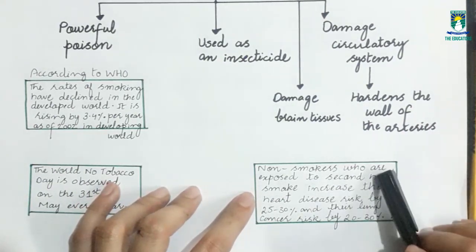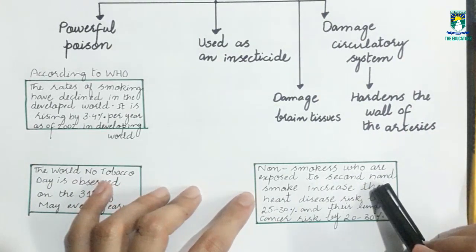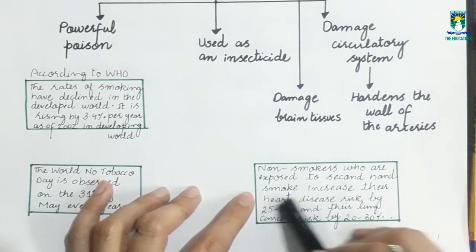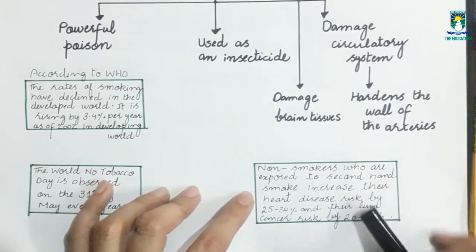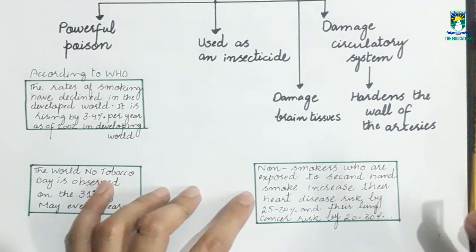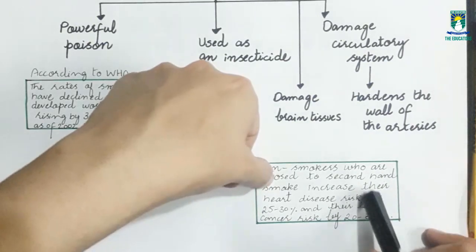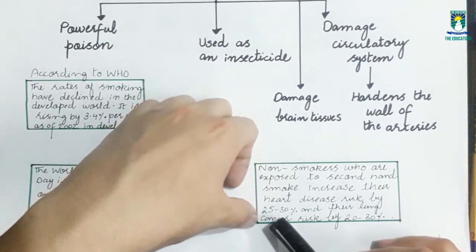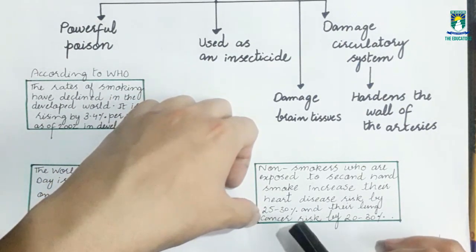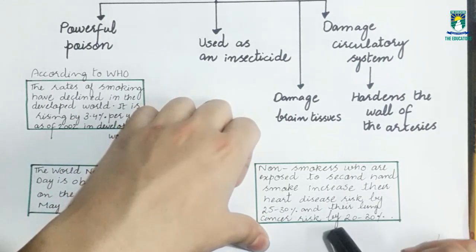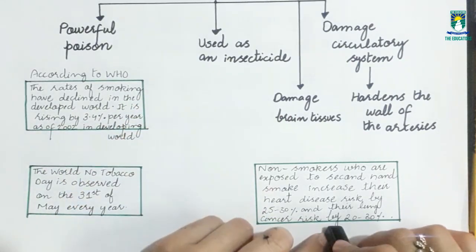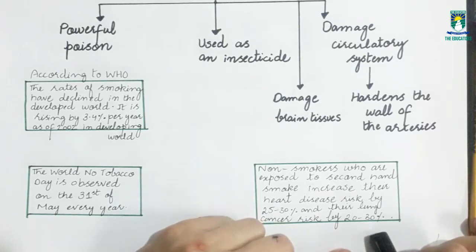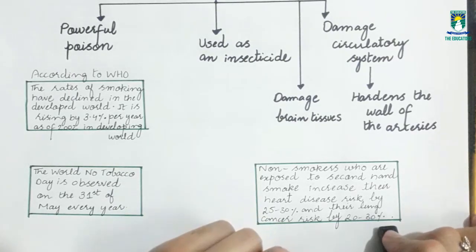Non-smokers who are exposed to second hand smoke, passive smoking, have increased risk of heart disease by 25 to 30 percent. And their lung cancer risk is increased by 20 to 30 percent as compared to other non-smokers.